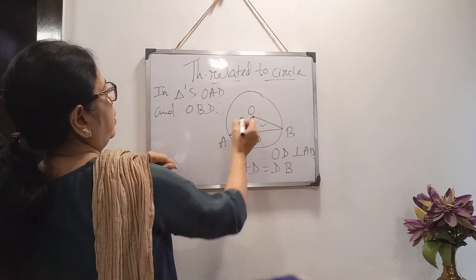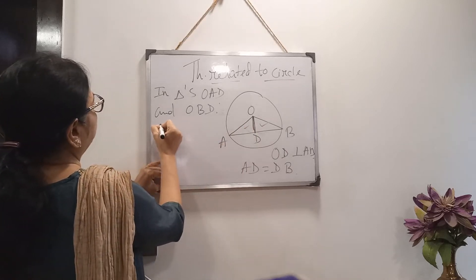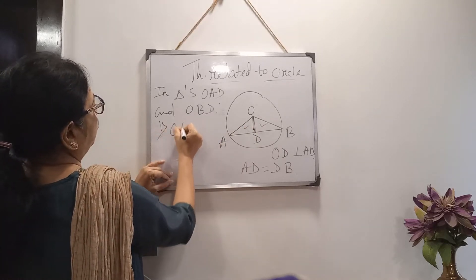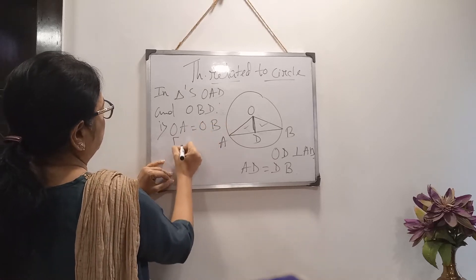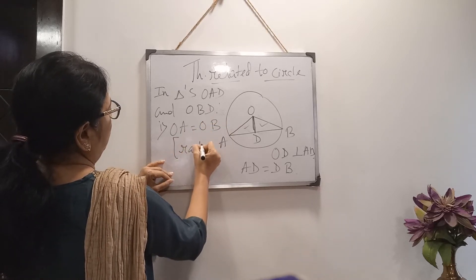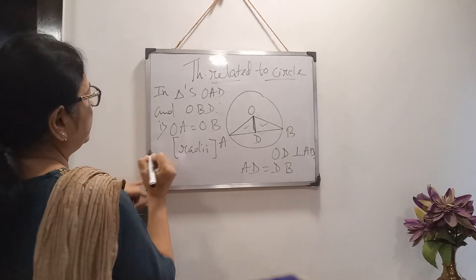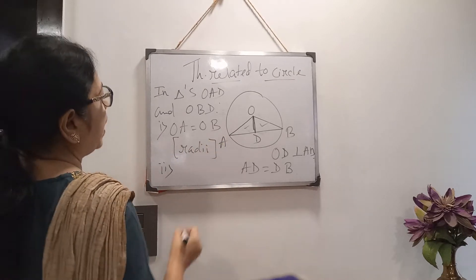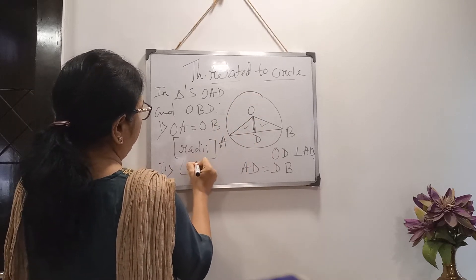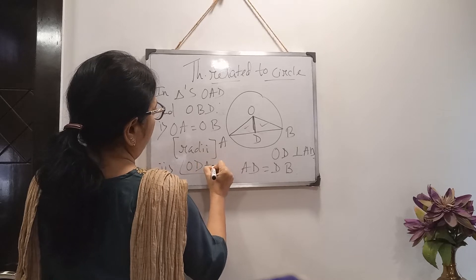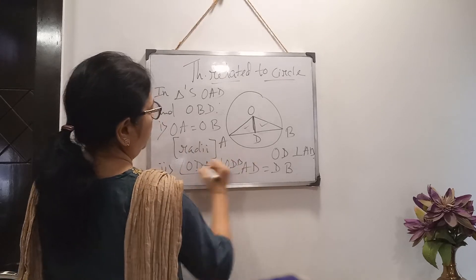In these two triangles, OA and OB are both radii, so OA equals OB — reason: radii of the same circle. Since OD is perpendicular on AB, angle ODA equals angle ODB — both are right angles.